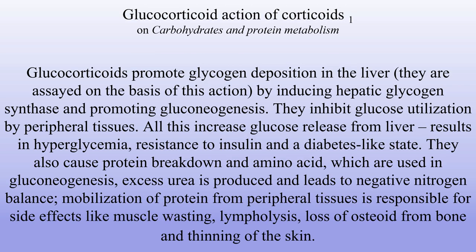Glucocorticoid action on carbohydrates and protein metabolism. Glucocorticoids promote glycogen deposition in the liver by inducing hepatic glycogen synthase and promoting gluconeogenesis. They inhibit glucose utilization by peripheral tissues. All these increase glucose release from liver and result in hyperglycemia, resistance to insulin, and a diabetes-like state. They also cause protein breakdown and amino acid release, which are used in gluconeogenesis. Excess urea is produced, leading to negative nitrogen balance. Mobilization of protein from peripheral tissues is responsible for side effects like muscle wasting, lympholysis, loss of osteoid from bone, and thinning of the skin.